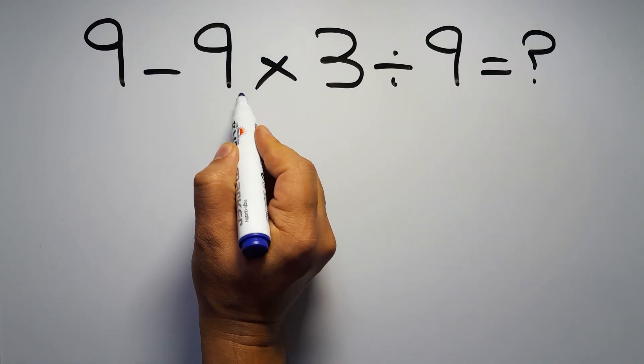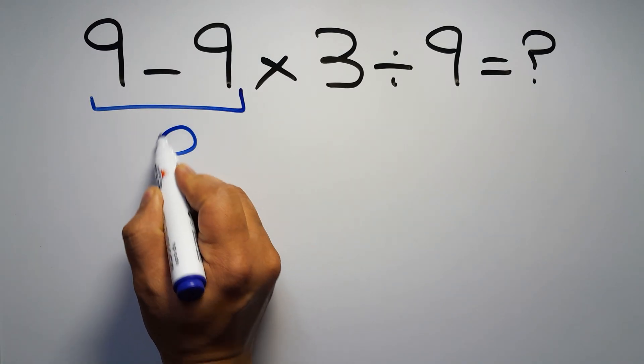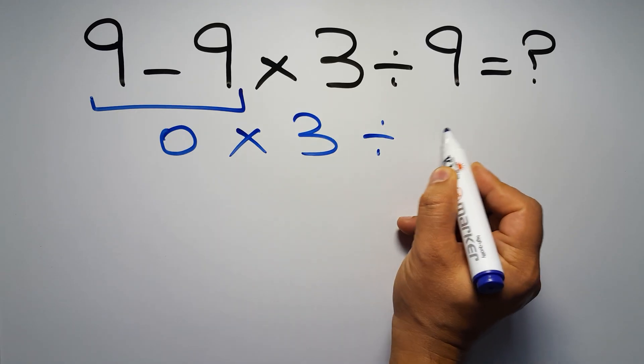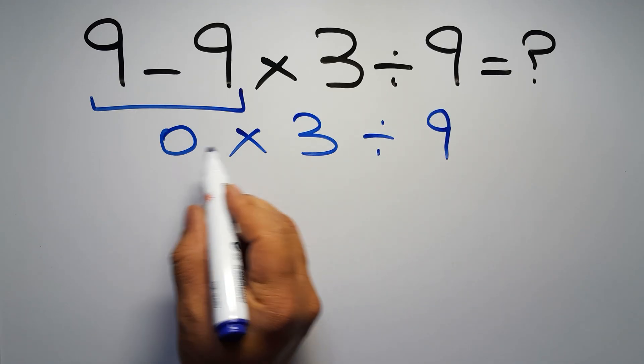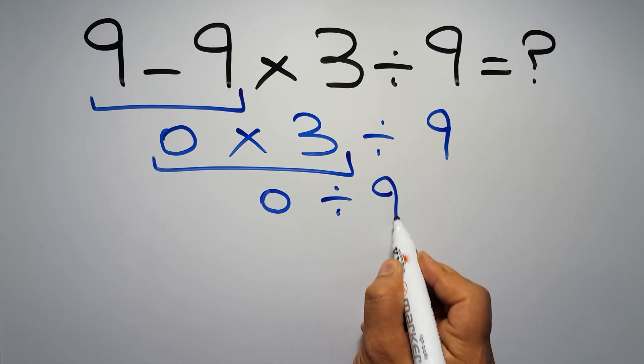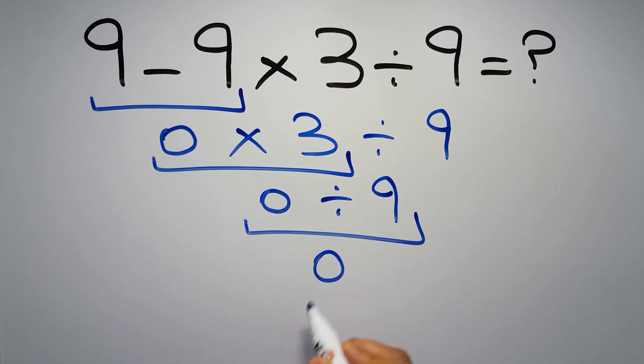9 minus 9 equals 0, so 0 times 3 then divided by 9. 0 times 3 equals 0, and 0 divided by 9 is just 0. But this answer is not correct because according to the order of operations first...